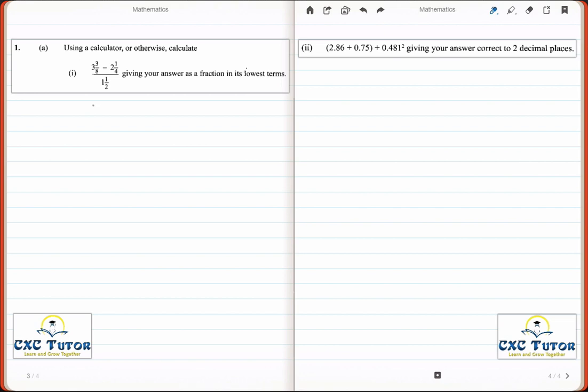In order to start this question, the first thing I would do would be to convert these mixed fraction expressions into improper form. So for the first one, you have 3 and 3/8. To get to improper form, you multiply the 3 by 8 and you add 3. So 3 times 8 plus 3 is 27 over 8.